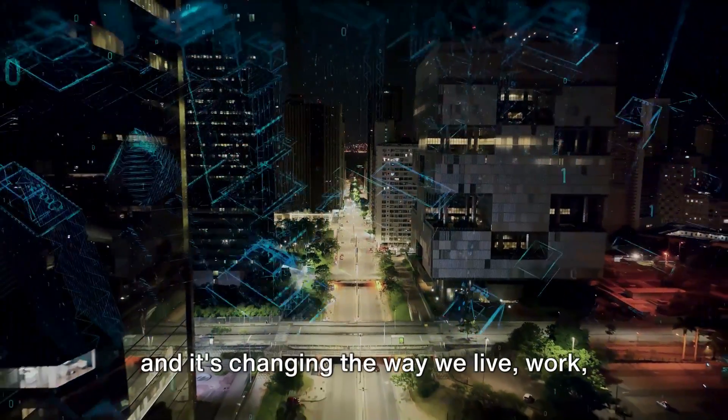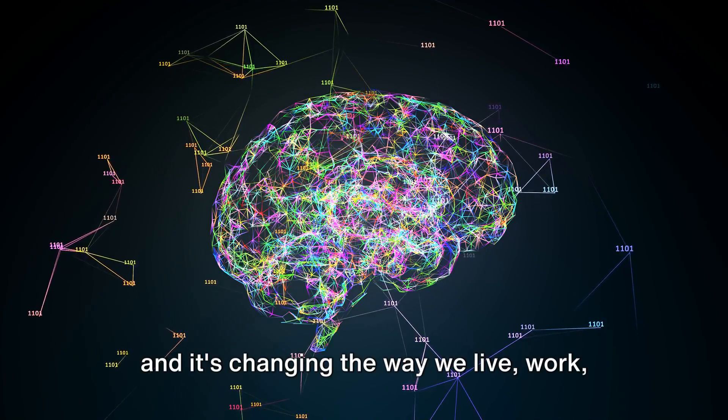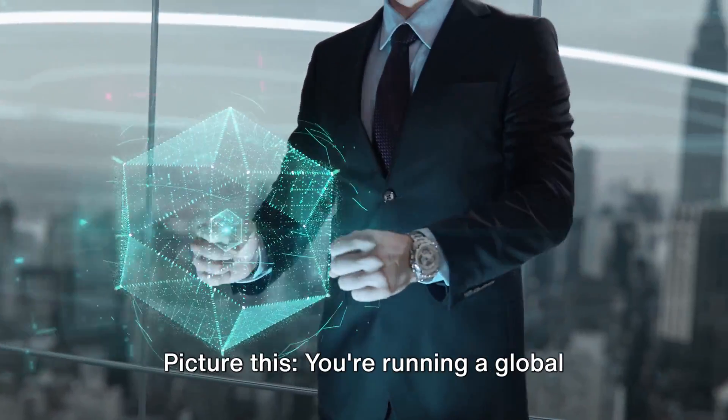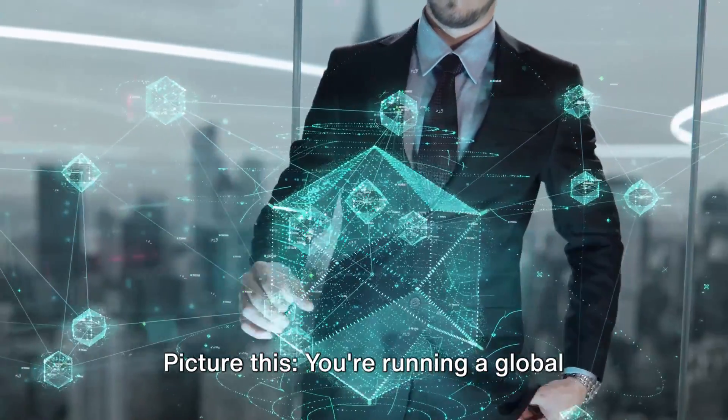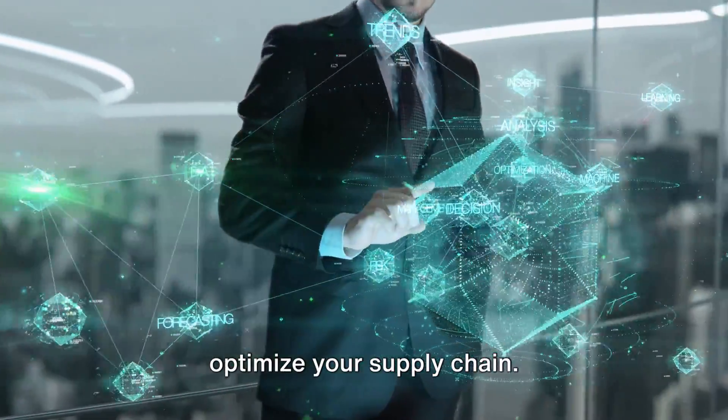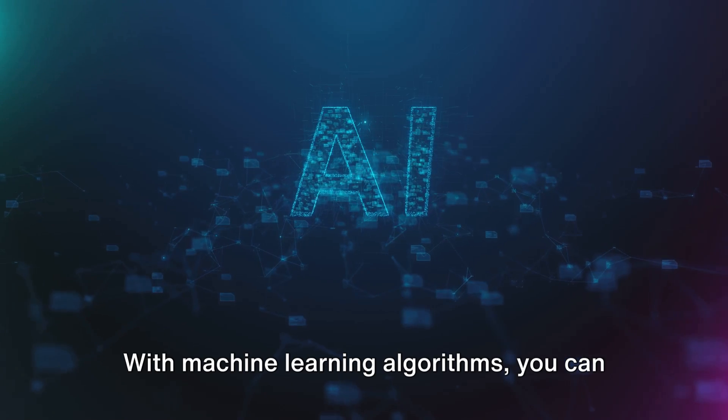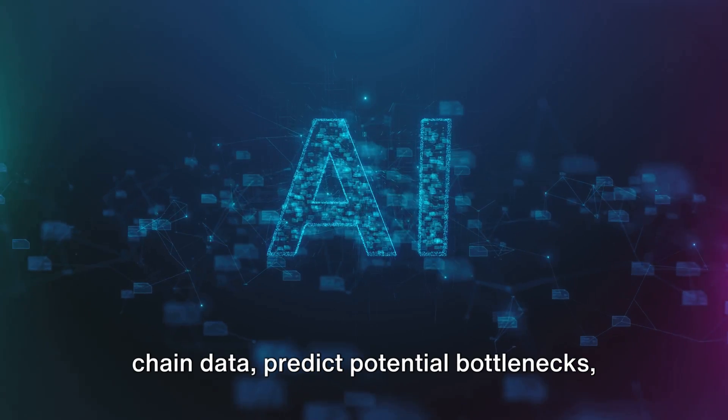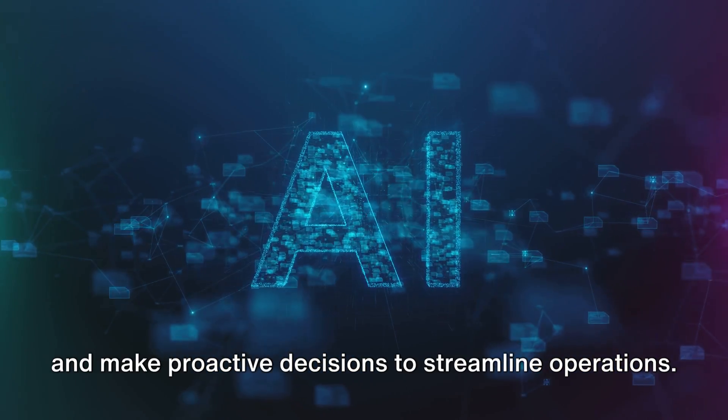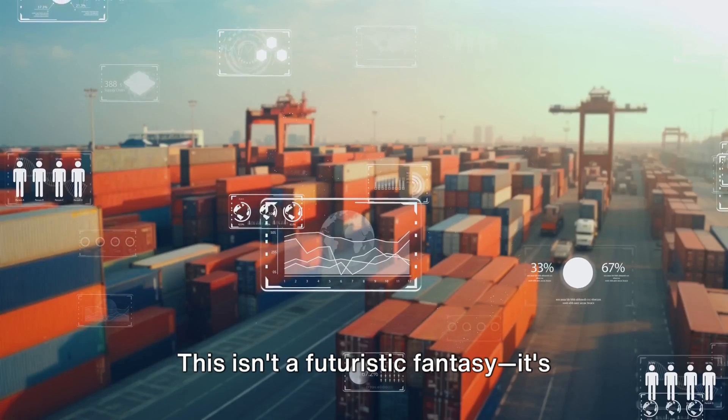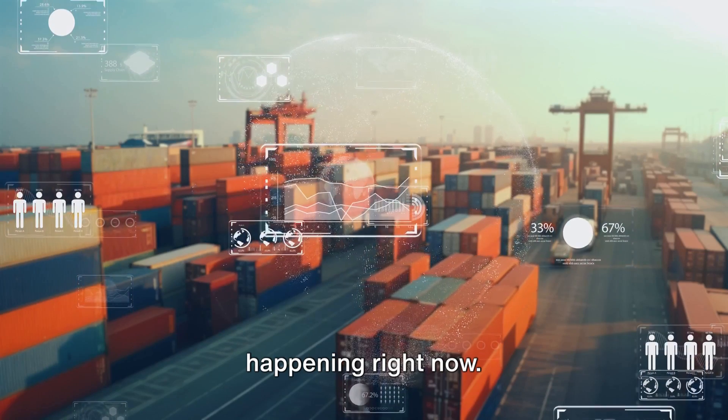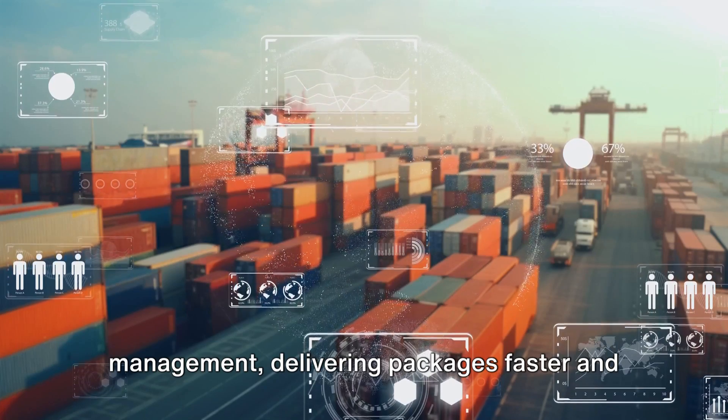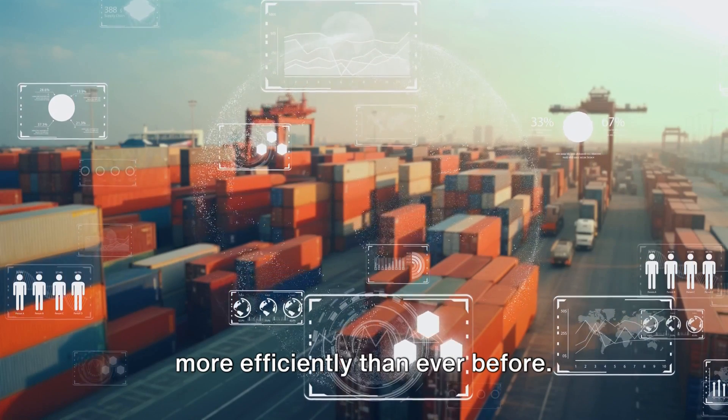The AI revolution is already underway, and it's changing the way we live, work, and learn. Imagine being a manager with the power of predictive analytics at your fingertips. Picture this: you're running a global logistics company, and you need to optimize your supply chain. Enter AI. With machine learning algorithms, you can analyze patterns and trends in your supply chain data, predict potential bottlenecks, and make proactive decisions to streamline operations. This isn't a futuristic fantasy, it's happening right now. Companies like Amazon are leveraging AI to revolutionize their supply chain management, delivering packages faster and more efficiently than ever before.